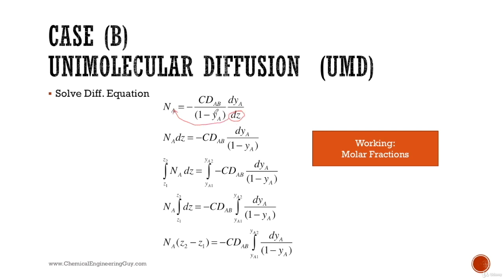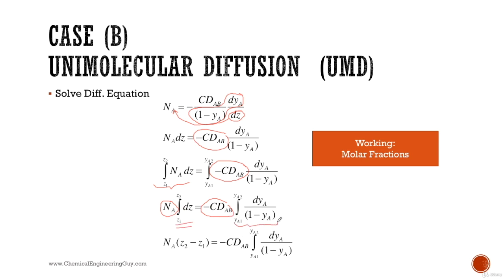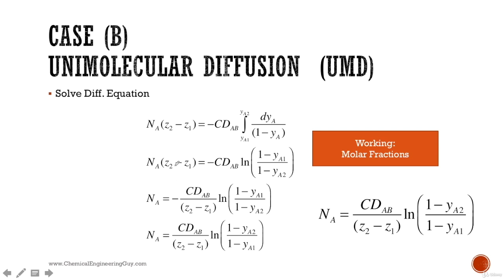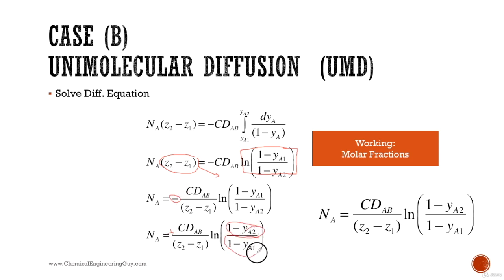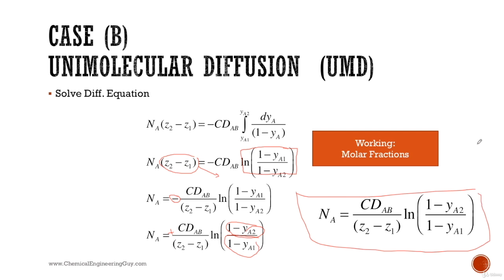Separating variables and integrating: total concentration C and diffusivity D are constants, so they come outside the integral. Molar flux N_A is also independent of position. Solving both sides, the right side yields the natural logarithm. Accounting for the negative sign and reordering gives the molar flux of A in unimolecular diffusion as: N_A = (C·D_AB)/(z_2 − z_1) times ln[(1 − Y_A2)/(1 − Y_A1)].